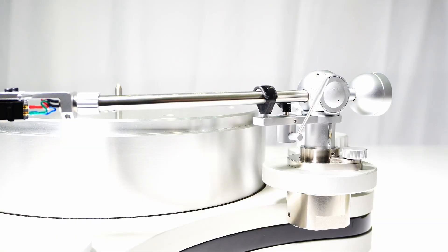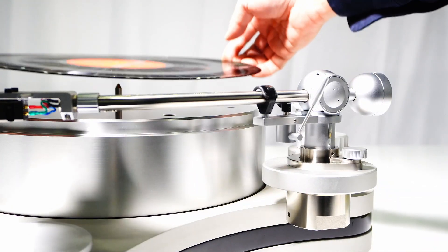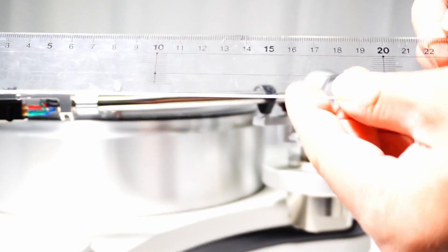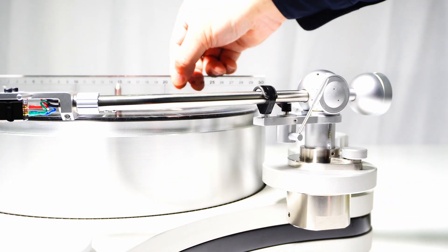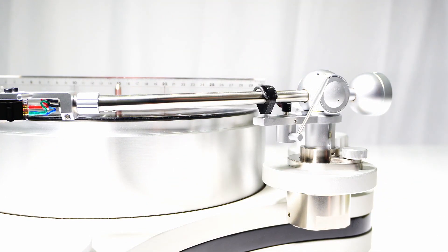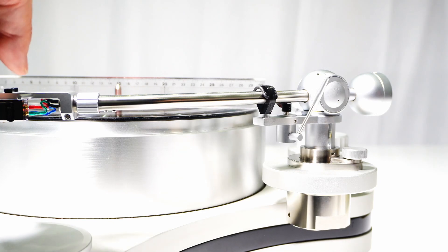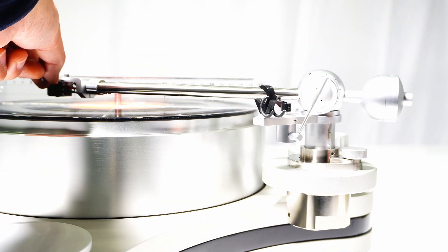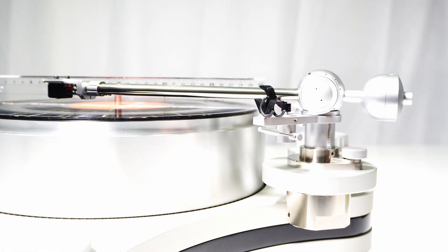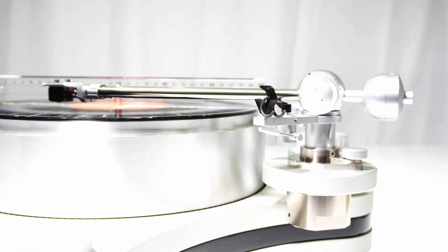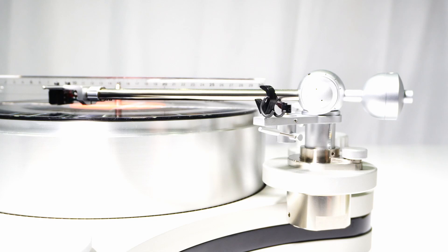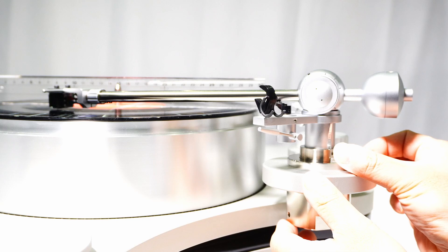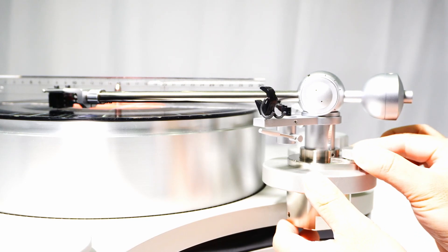VTA - Vertical Tracking Angle setting. Set the scratched vinyl on the platter and put the scale on the vinyl. Set the tonearm at the tracking position and make sure that the tonearm is perfectly parallel to the vinyl surface by using a scale as a guideline. If it is not parallel, use the tonearm height adjustment screw until you get the correct height.